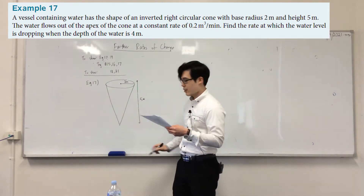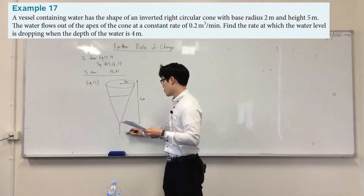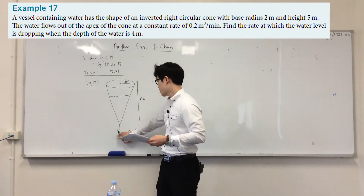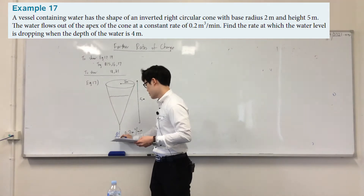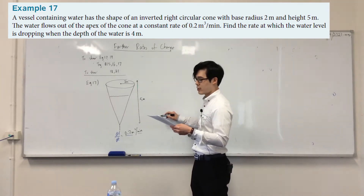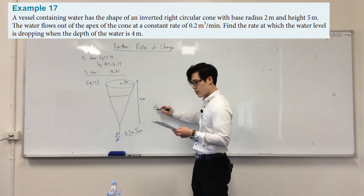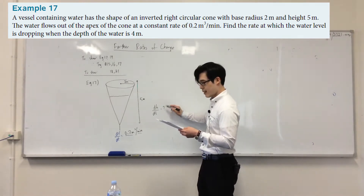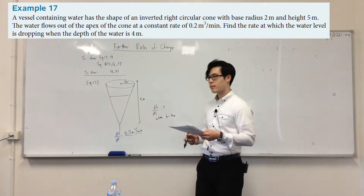The water flows out of the apex of the cone, so it's coming out here. The water is flowing out at a rate of 0.2 cubic meters per minute. That represents dV/dt — volume over time. The question asks: find the rate at which the water level is dropping, which is dh/dt, when the depth h is equal to four meters.